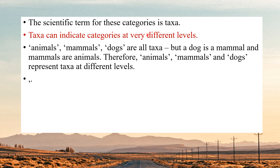NCERT has given some examples: dogs is a mammal, and mammals are animals. So 'dogs' is a category because there are different kinds of dogs; 'mammals' is a category because there are different kinds of mammals — dogs, cats, humans; and 'animals' is a category containing different kinds of animals. So dogs, mammals, and animals are all categories, and the scientific term for categories is taxa.